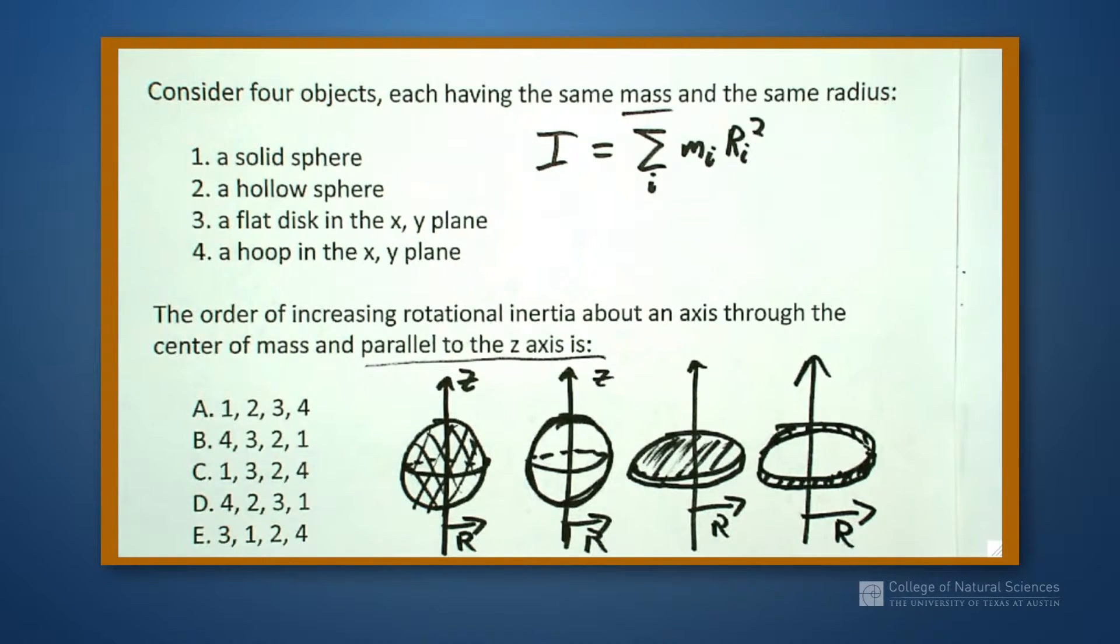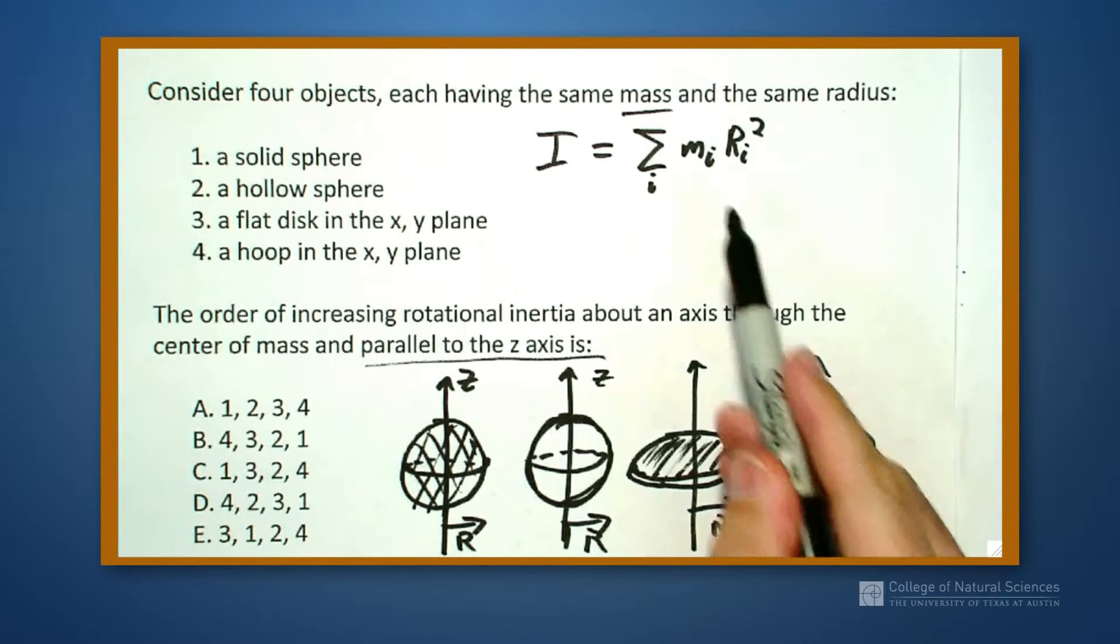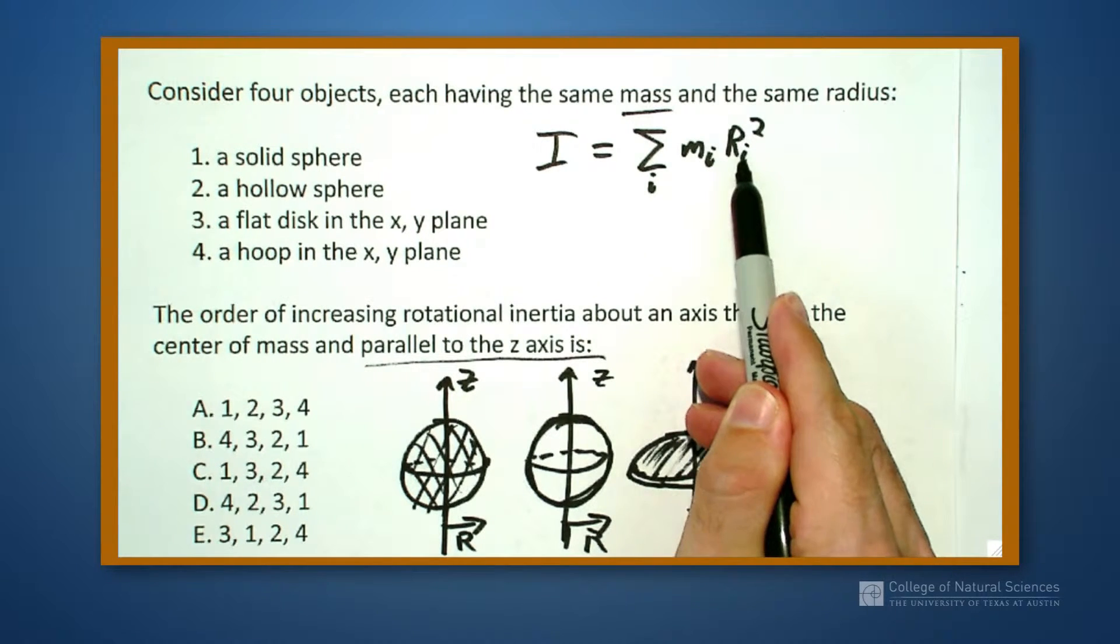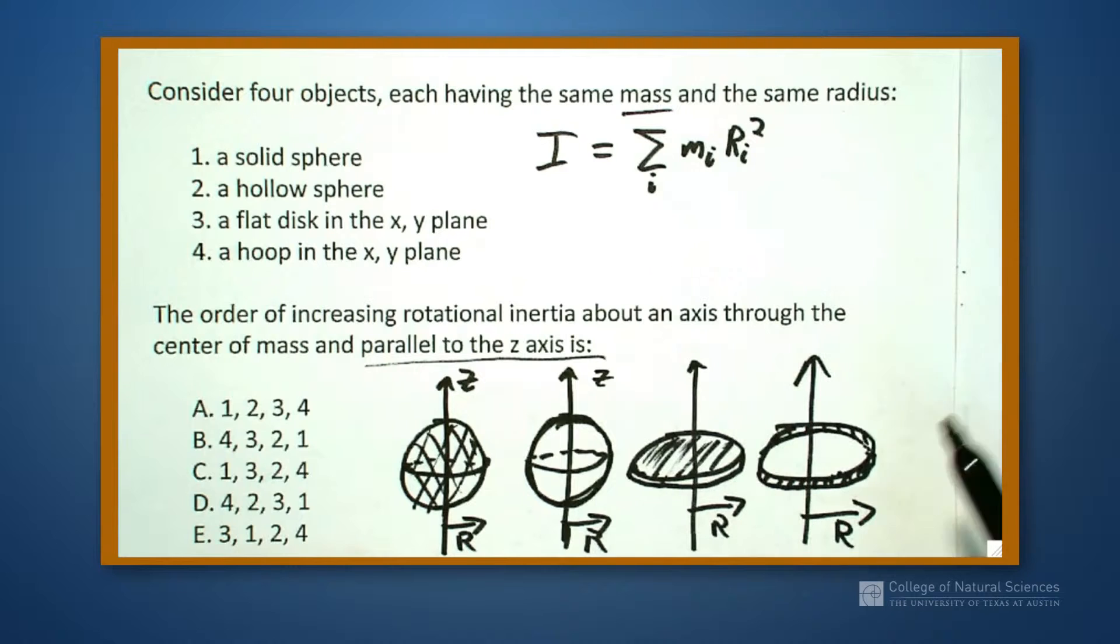So we ask ourselves, which of these is going to give us the most moment of inertia or the least amount of moment of inertia? So I'm going to look at this case right here, and without even knowing what the coefficients are for these, I can actually determine this by just knowing the further the mass is away on average, the higher the moment of inertia.